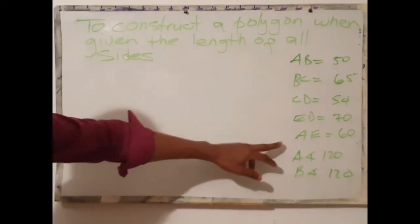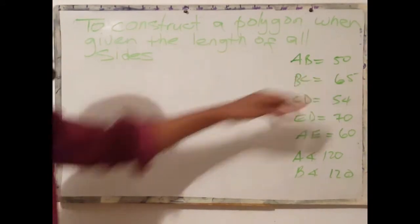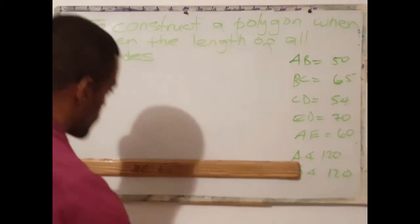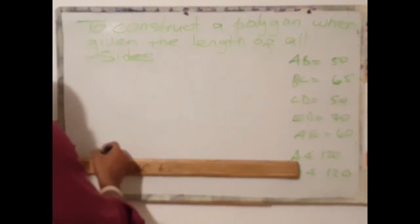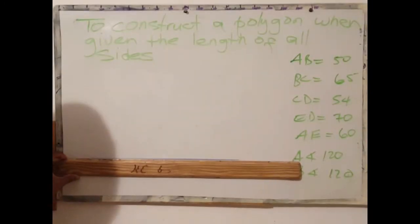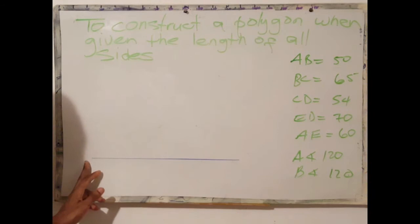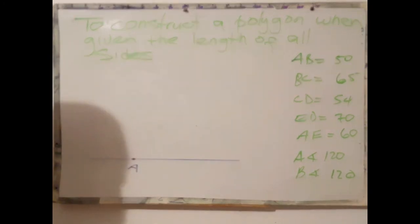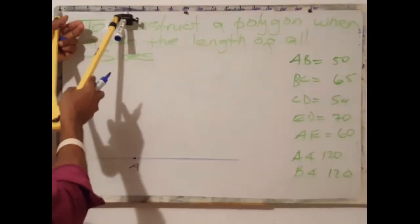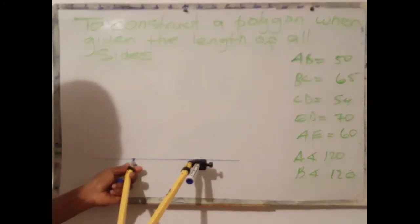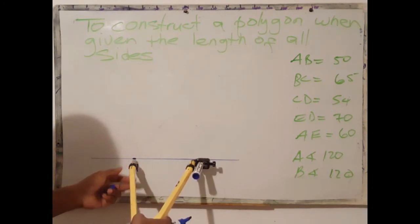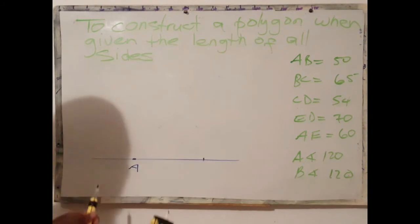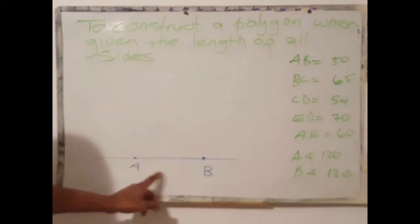The first step is to draw a horizontal line AB. Use a random length line of approximate length 50 mm or more. Now that I've drawn my horizontal line, my next step is to identify my starting point A. From point A, measure 50 mm — that will give us point B. So A to B is 50 mm. This is our side AB, 50 mm.